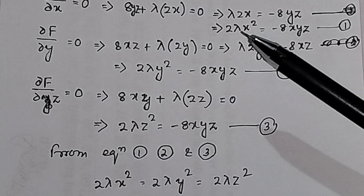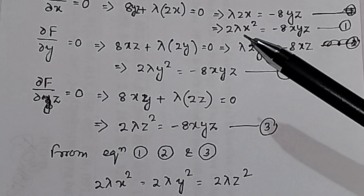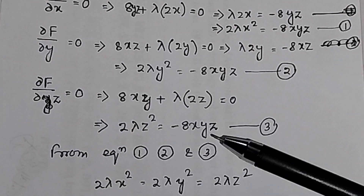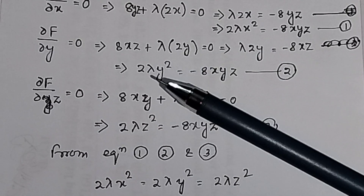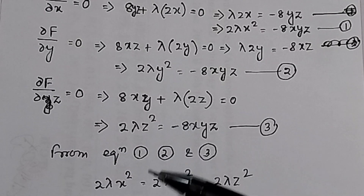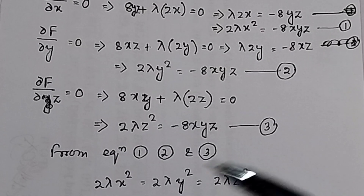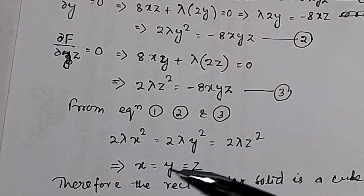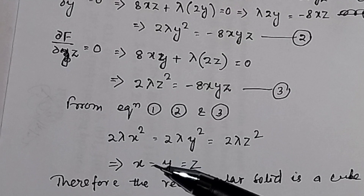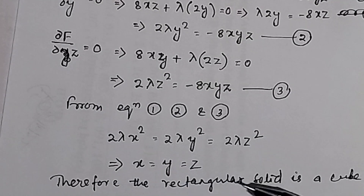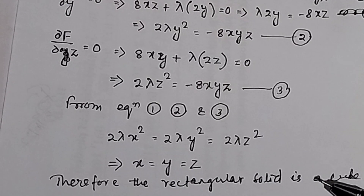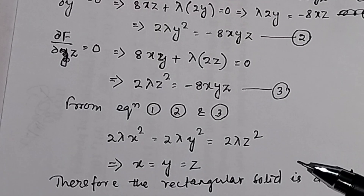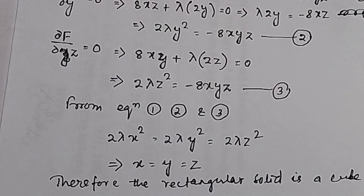You can see that the right-hand side of equations 1, 2, and 3 are all the same: −8xyz. So 2λx² = 2λy² = 2λz². Dividing through by 2λ gives x² = y² = z², therefore x = y = z. Thus the rectangular solid is a cube inside the sphere. In this way, you can find out how constraint maximization can be used by using the Lagrange multiplier technique.